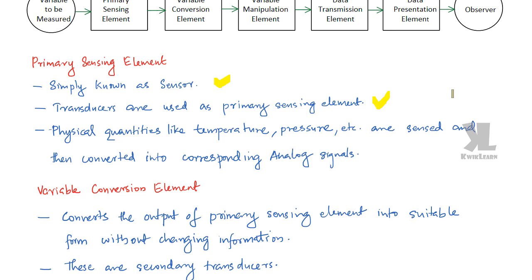Transducers, for example: a microphone converts sound waves into corresponding electrical signals. A loudspeaker does the vice versa — electrical signals are converted to corresponding sound. Then we have pressure measurement transducers. Also, an antenna is a type of transducer — it converts electrical signals into electromagnetic waves.